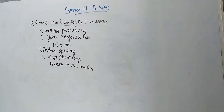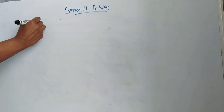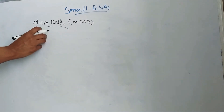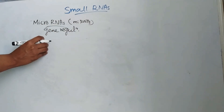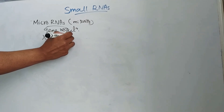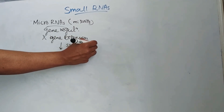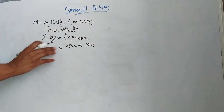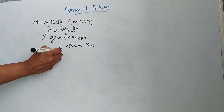Next one is microRNAs or miRNAs. These play important roles in gene regulation. miRNAs cause inhibition of gene expression by decreasing specific protein production through distinct mechanisms. These are single-stranded RNA molecules, 21 to 23 nucleotides in length.